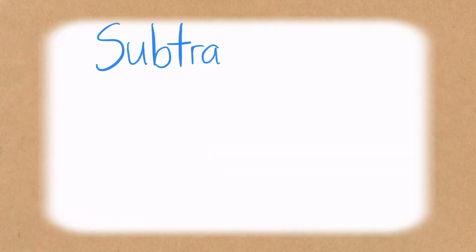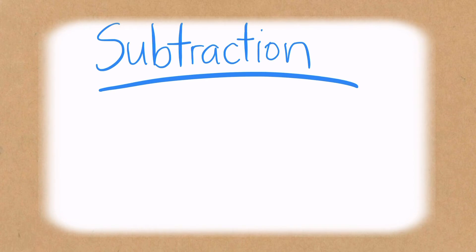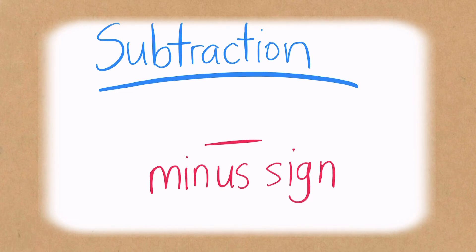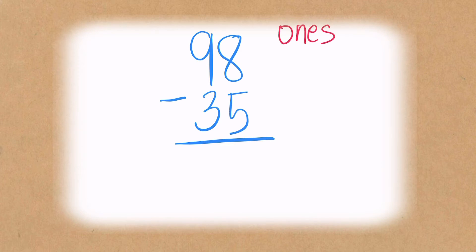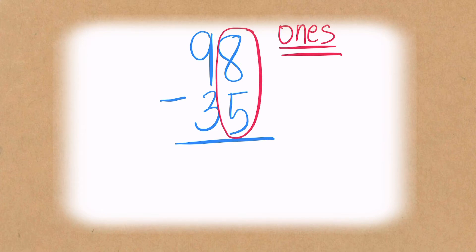It's the same steps and rule when you are trying to solve for the difference in subtraction, but of course you'll be using the minus sign instead of the plus sign. Now let's look at the first example: we have 98 minus 35. We need to solve for the ones place first, and that is eight minus five. Remember, if it's minus you have to take away — so what is eight minus five?